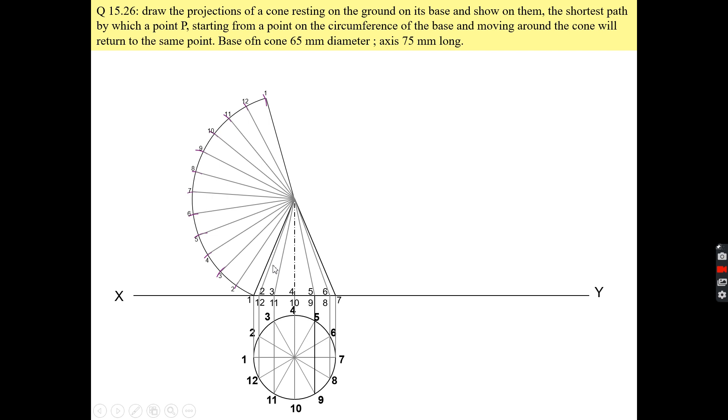In this developed part, because it is a flat surface, you can easily tell what is the shortest path from point 1 to point 1. Obviously, the straight line joining these two points is the shortest path. So I will join these two points with a straight line. When the point P is on point 1, it will go through this straight line and again come to point 1.